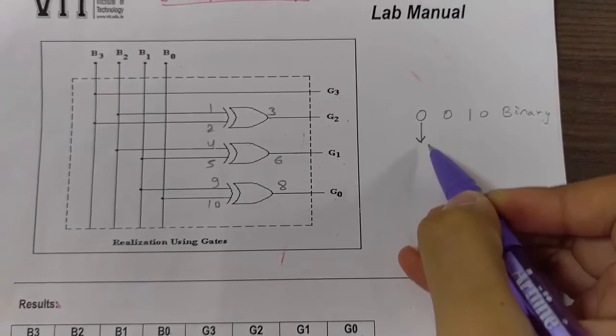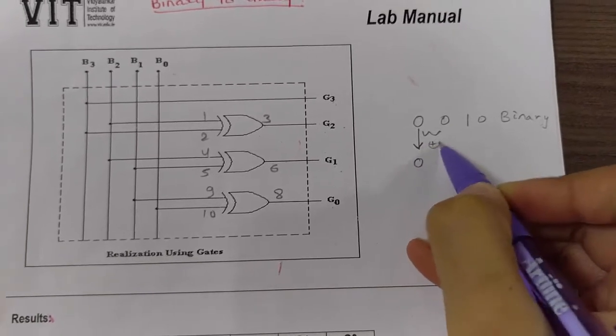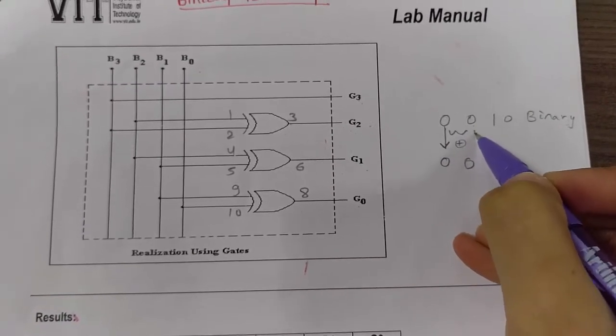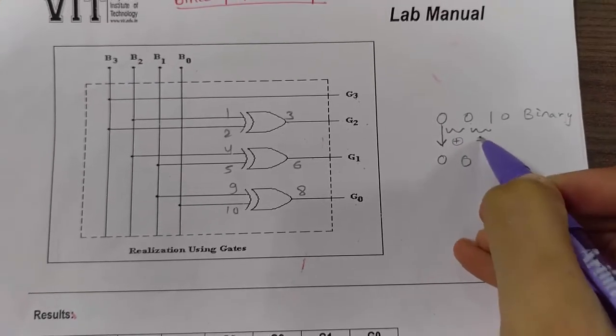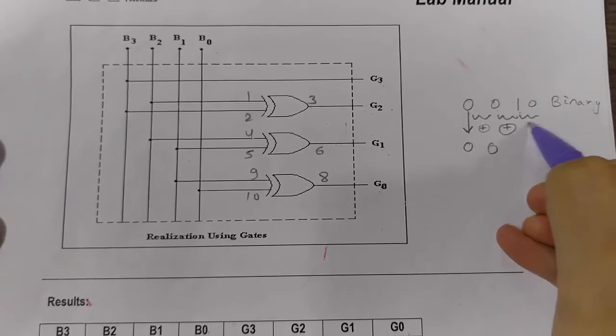The first binary digit is written as it is, and the first and second are XORed and written: 00 XORing is 0. The second and third digits are XORed, and the second last and last digits are XORed and written.